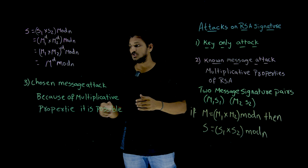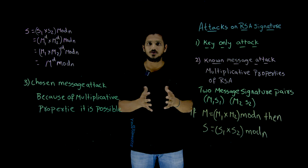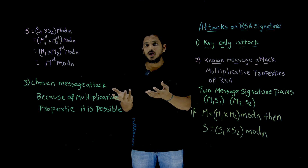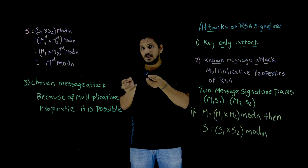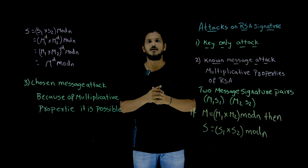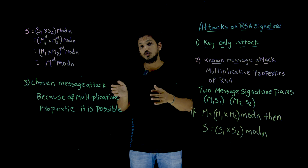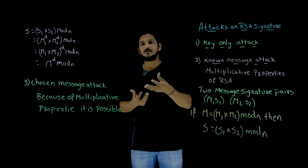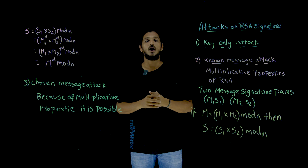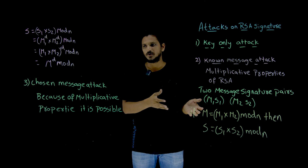But coming to the next one — chosen message attack. Is it possible? Yes, because of this multiplicative property it may be possible. Chosen message attack means you need to have access to the person who is going to sign the message. If you have that access, you can choose a message and get a signature from him — for example, if you are a lawyer for a businessman. You may find two messages, multiply them to get a valid message, plan those messages, get them signed, and then use them. This is what we call a chosen message attack.